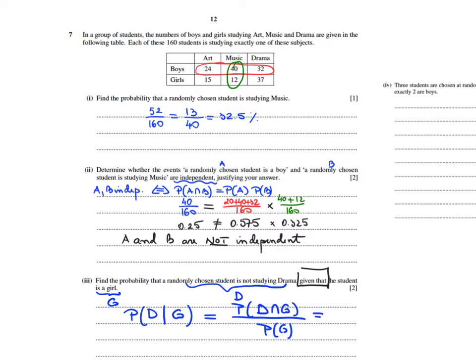How many girls are studying drama? Girls that are studying drama: I have 37. Out of how many girls? 15 plus 12 plus 37. So my answer will be 57.8% to three significant figures.